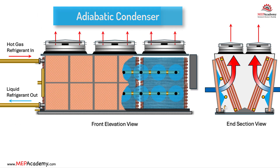The adiabatic version of the air-cooled condenser uses a fully wetted medium that sits in front of the heat exchanger coil. The airflow and heat transfer process is the same as previously discussed using the adiabatic fluid cooler, except now refrigerant is the medium being cooled instead of water.